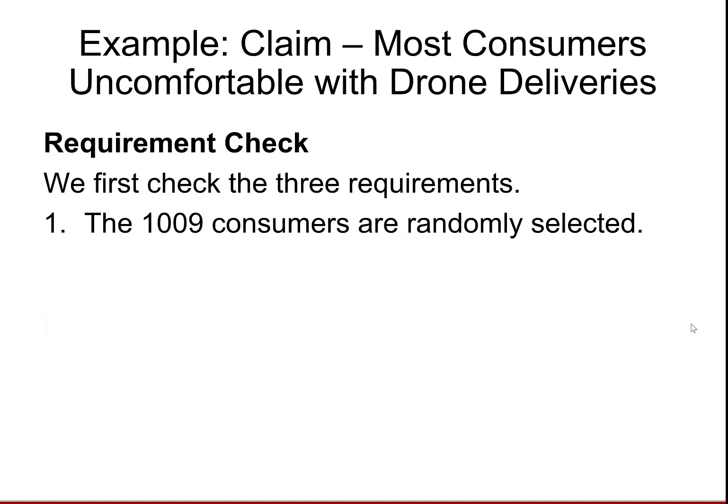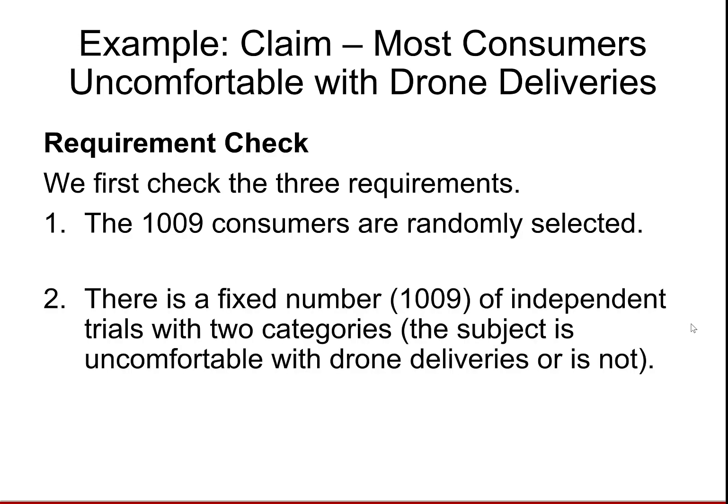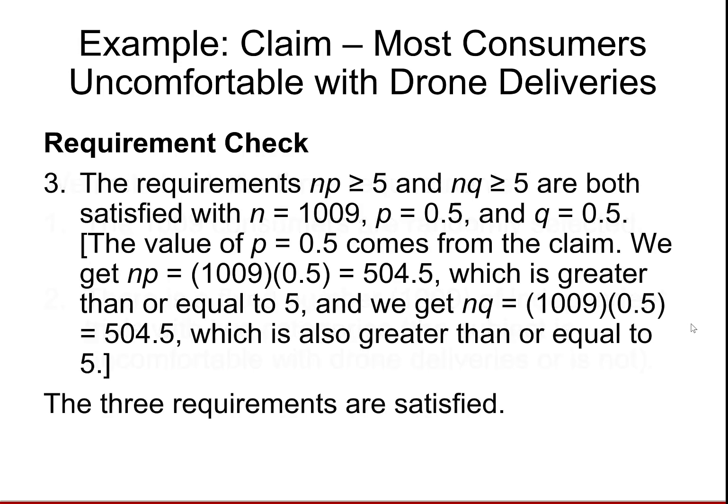We'll test the requirements first. There are three requirements. There are 1,009 randomly selected consumers. There's a fixed number of independent trials with two categories — the subject is either uncomfortable with drone deliveries or not. The requirement that NP and NQ are both greater than or equal to 5 is satisfied: 1,009 times the P from the null hypothesis (0.5) gives 504.5 for both NP and NQ, and they're both greater than or equal to 5.